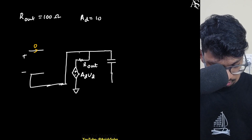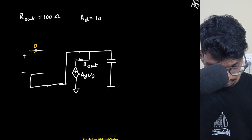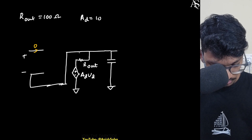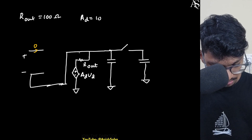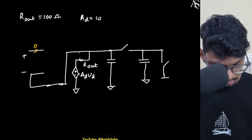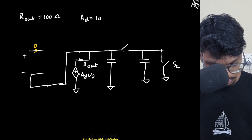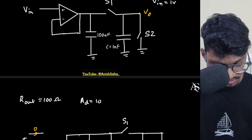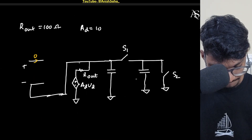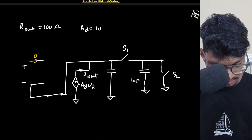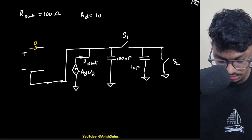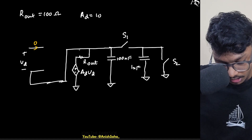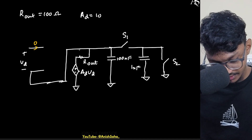A capacitor is always connected at the output node. There is another capacitor through a switch S1, and another switch S2. The small capacitor is 1 nanofarad and the larger one is 100 nanofarads. Vd is the differential voltage at the op-amp input.